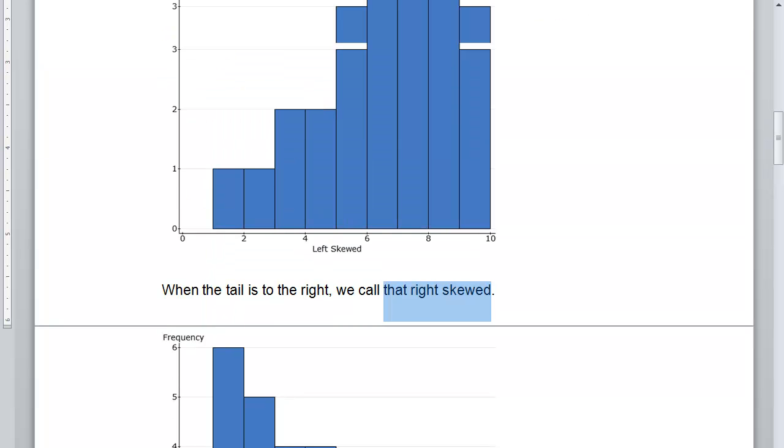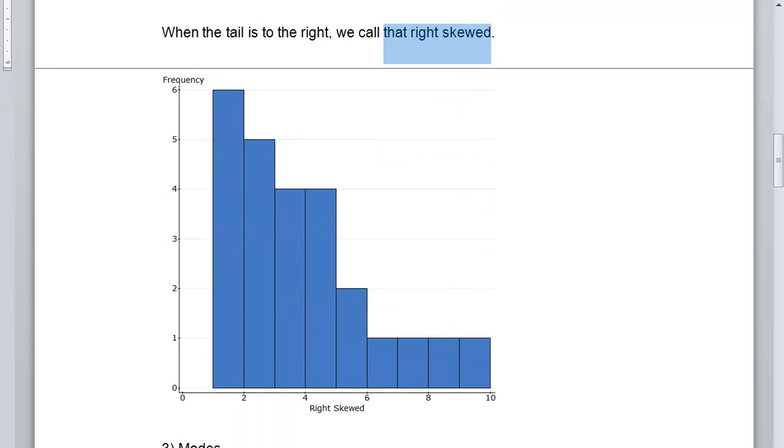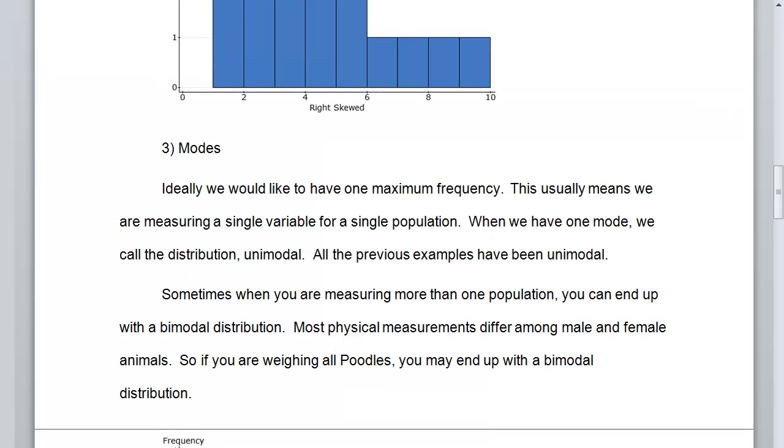This means that if I have these types of distributions, I can't use the normal model, student T. I've got to use some other stuff that maybe your professor will talk about.